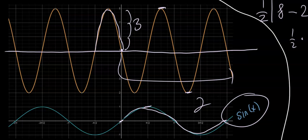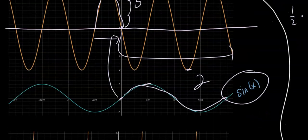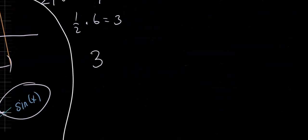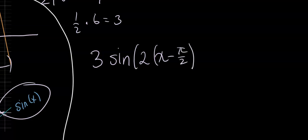Finally, our vertical shift—it looks like we are five above the x axis, so our vertical shift is five. Given this equation, we can write: our amplitude is three, function is sine, times two which is our frequency, times x minus our horizontal shift which is pi over two, plus five which is our vertical shift.